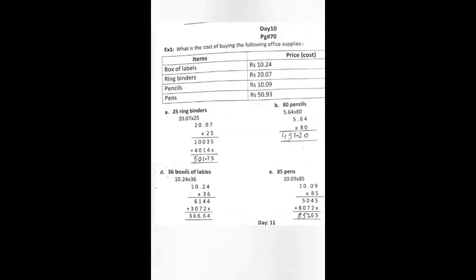In part B, we have to find out the total cost of 80 pencils, so we will multiply the cost of 1 pencil by 80. In part D, we will multiply the cost of boxes of label by 36, and in part E we will multiply the cost of 1 pen by 85 to find the total cost of 85 pens.